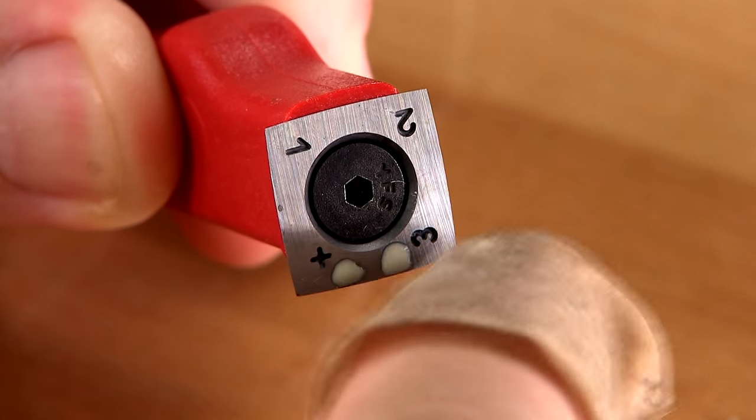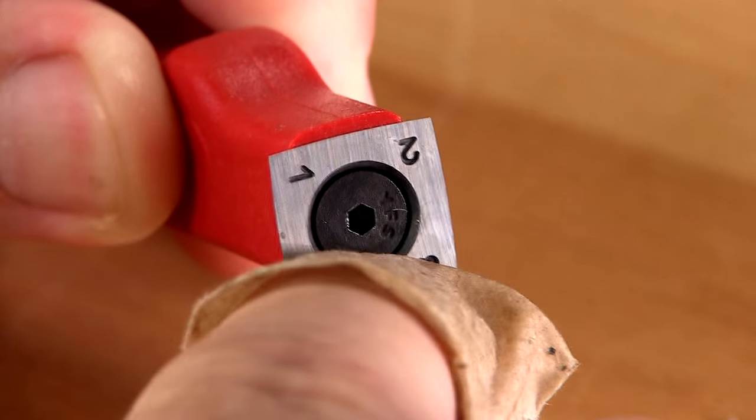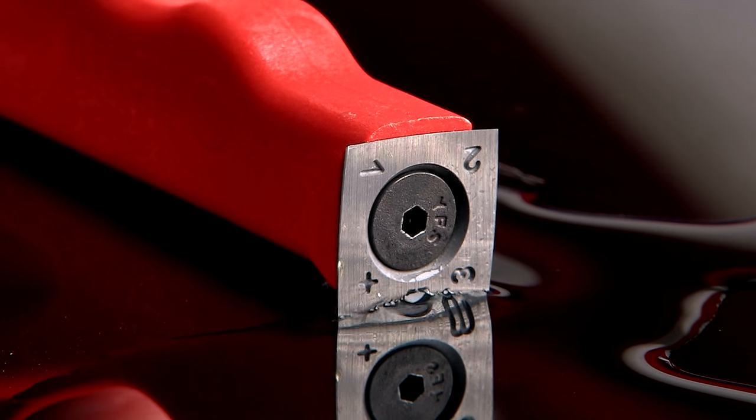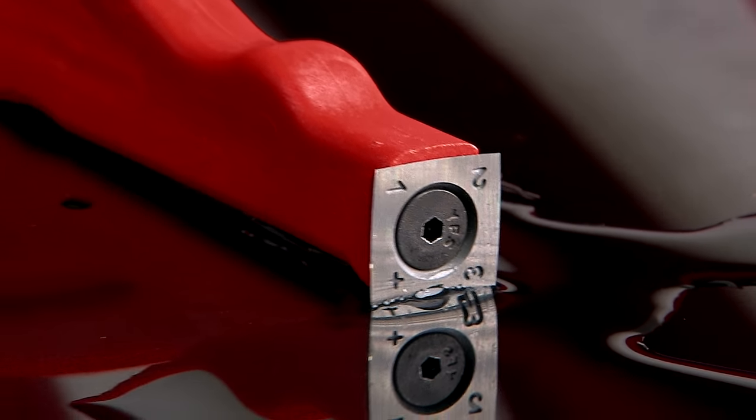You can easily clean excess glue on your scraper with a wet rag. And get this, because carbide steels are free of iron, the blade won't rust.